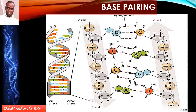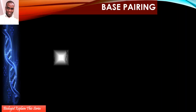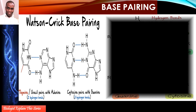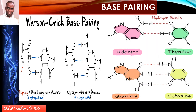Let's look at base pairing in detail. In G-C pairing, there are three hydrogen bonds. In A-T pairing, there are two hydrogen bonds. This is very important information for examinations and for understanding the stability of DNA as a molecule.